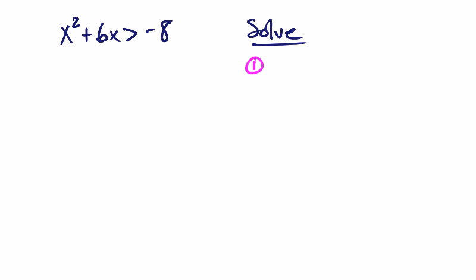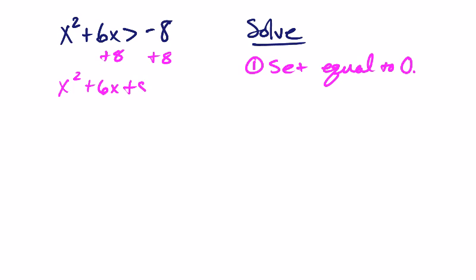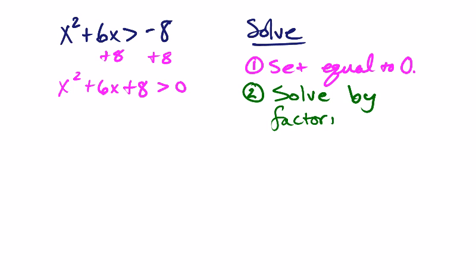The first thing you want to do is make sure everything is set equal to 0. So I'm going to add 8 on both sides, giving me x squared plus 6x plus 8 is greater than 0. Then I would solve it like any quadratic — I'm always going to look to factor first because that's easiest. What multiplies to 8 and adds to 6 gives me x plus 4 and x plus 2, and that's going to be greater than 0.